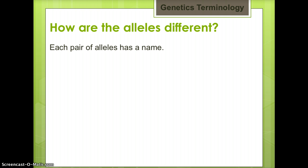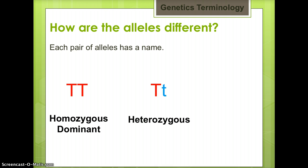Each pair of alleles has a name. Capital T capital T is called homozygous dominant. Capital T lowercase t is called heterozygous. Lowercase t lowercase t is called homozygous recessive. Remember, the prefix homo means same, and the prefix hetero means different.